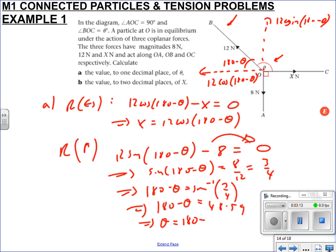Therefore, theta is 180 minus 48.59, so theta is 131 degrees. It says to 1 decimal place, so 131.4 degrees to 1 dp. Brilliant.